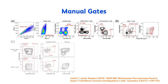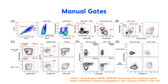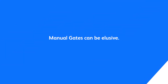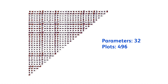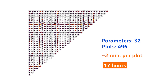Manual gates are essential and they are not going anywhere with high-parameter analysis. In this paper, they did a manual gate analysis on 30 parameters, and there's nothing wrong with that. But manual gates can be elusive. A 32-color experiment has 496 n-by-n plots. Assuming it takes about 2 minutes per plot to draw your gate, it will take about 17 hours just to set up your gating hierarchy. It is just impossible to look at all n-by-n plot combinations.